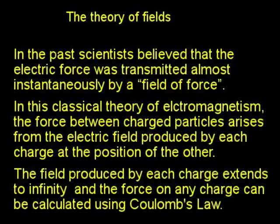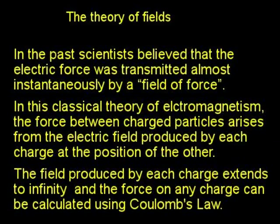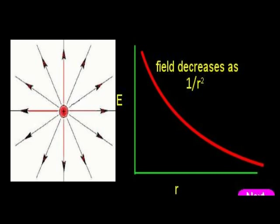In the past, scientists believed that the electric force was transmitted almost instantaneously by the field. In this classical theory of electromagnetism, the force between charged particles arises from the electric field produced by each charge at the position of the other. The field extends to infinity and the force on any charge can be calculated using Coulomb's law. The Coulomb force is a long-range force, just like the gravitational force that exists between masses. These two forces are examples of what is classically called action at a distance, which follows an inverse square law. The electric field of a point charge also follows an inverse square law — it decreases as 1/r² and becomes zero only at infinity.